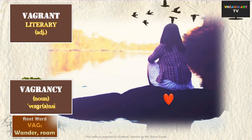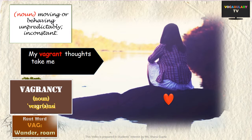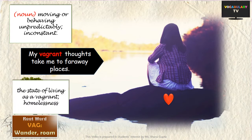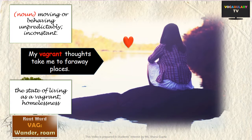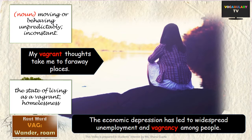In a literary sense, the same word can describe something that wanders idly, or moves or behaves unpredictably and is inconstant. For example, 'My vagrant thoughts take me to faraway places.' A related word is 'vagrancy,' which is a noun referring to the state of living as a vagrant and being homeless. An example sentence: 'The economic depression has led to widespread unemployment and vagrancy among people,' suggesting they are simply wandering about in search of a living.